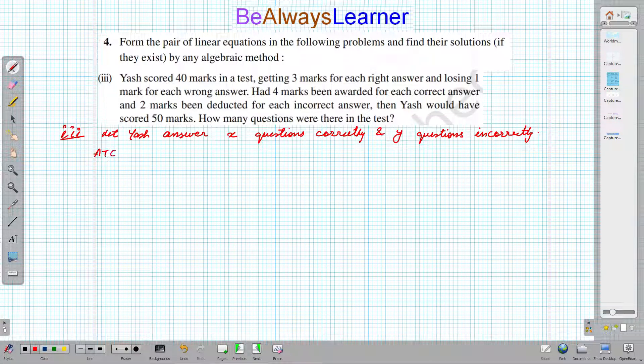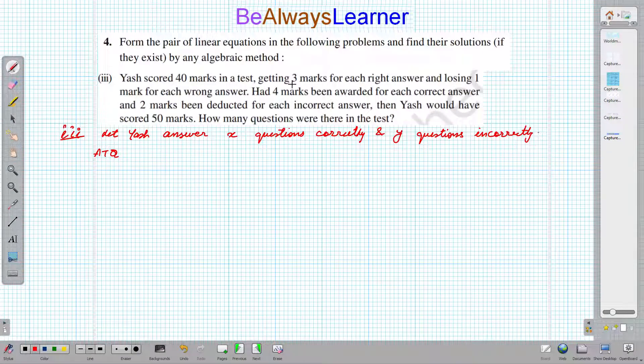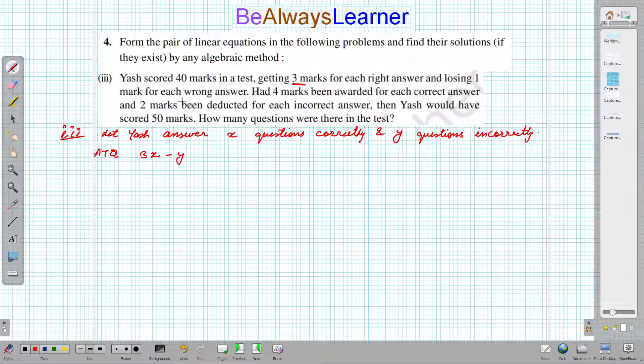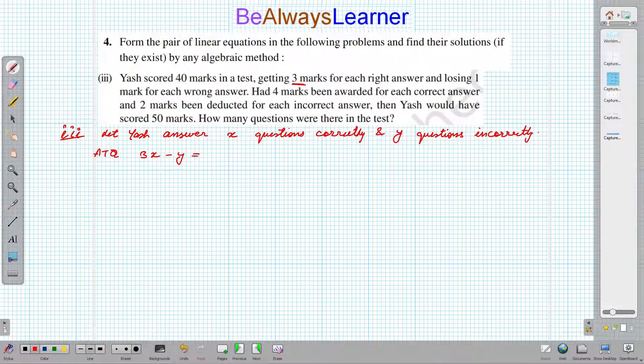According to the question, 3 marks for each right answer and losing 1 mark for each wrong answer, then it is 40 marks. So 3x minus y equals 40.